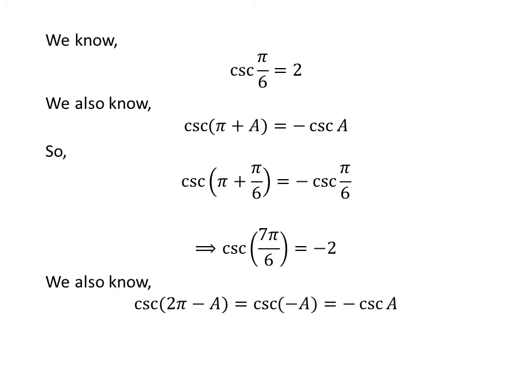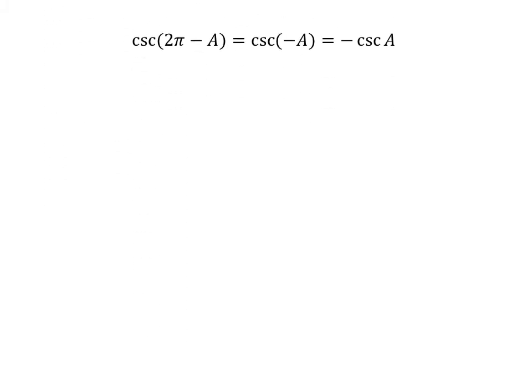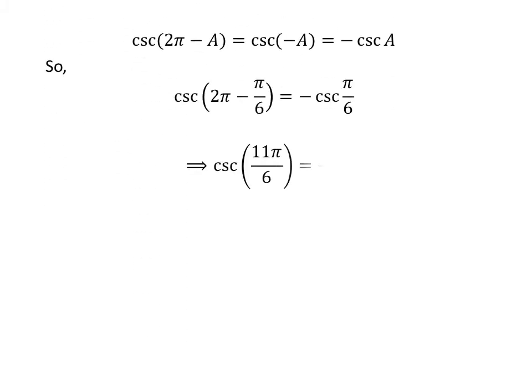We know the value of cosec(x) repeats after an interval of 2π, so cosec(2π minus a) is equal to cosec(minus a). We also know the identity cosec(minus a) is equal to minus cosec(a). Applying this identity gives us cosec(11π/6) is equal to minus 2.